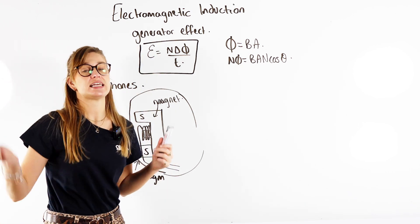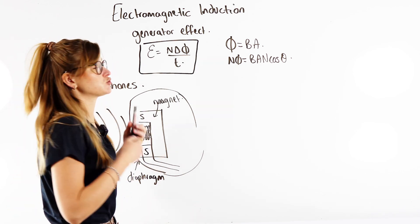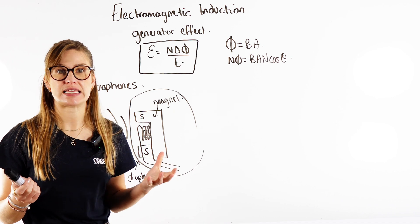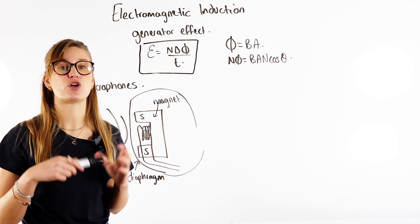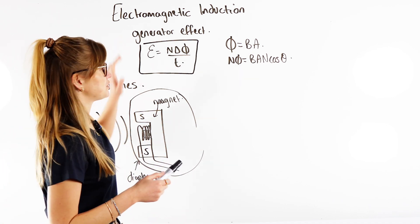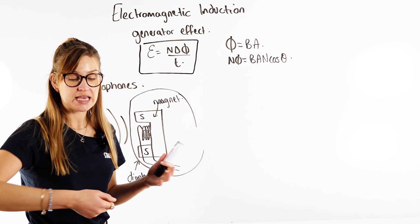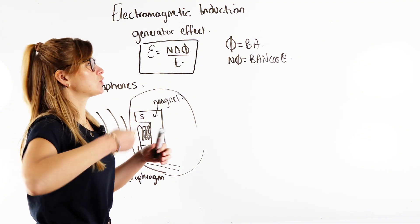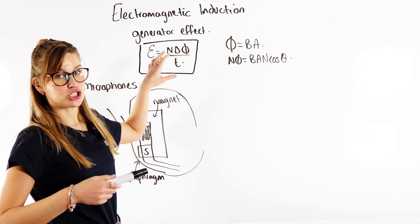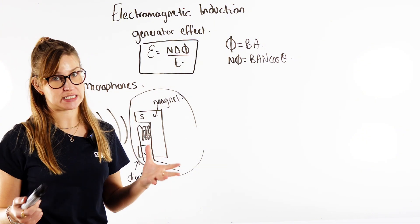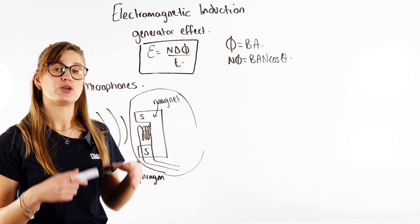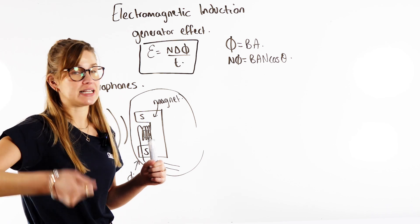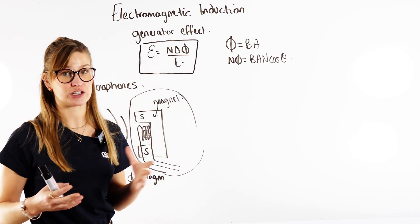In generators, which we're going to look at in another video, the generator effect is just what we call this. Same way as when you did GCSEs and F equals BIL — we did the motor effect. So the generator effect: if you spin a generator, you're spinning the wire around a coil. We're going to get an EMF induced, and we use generators to generate electricity. We always use them in the national grid — a spinning coil around a magnet gives us that induced EMF and our electricity.